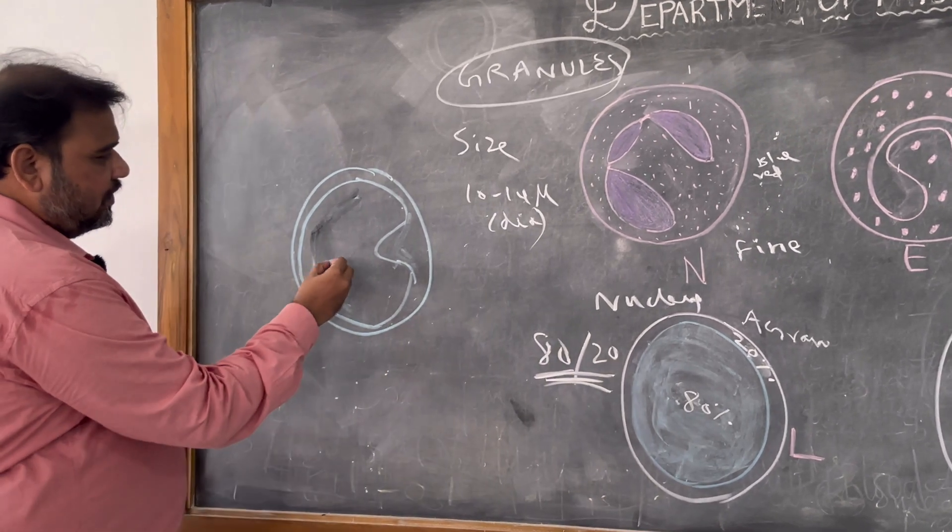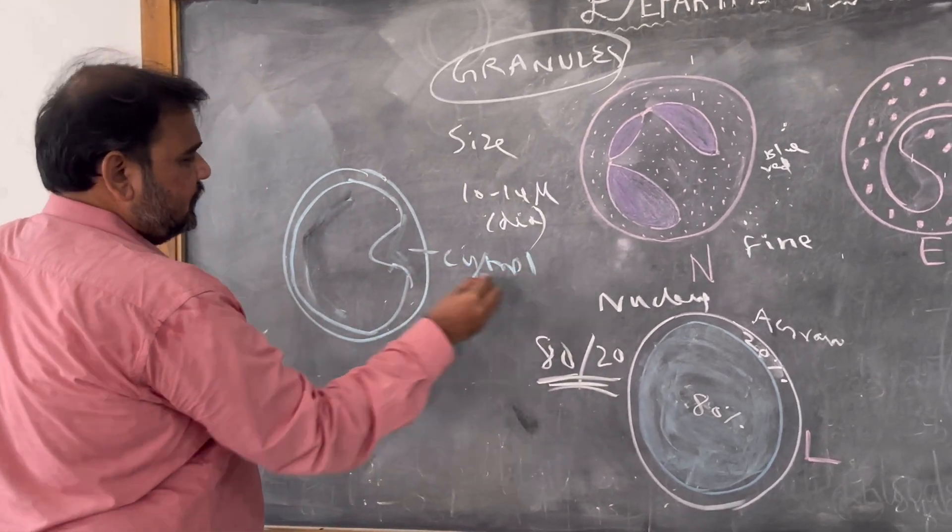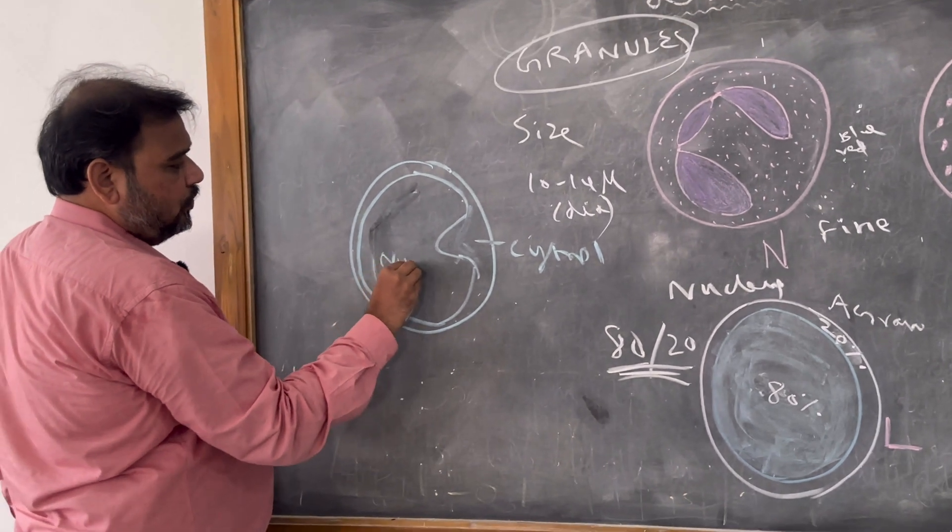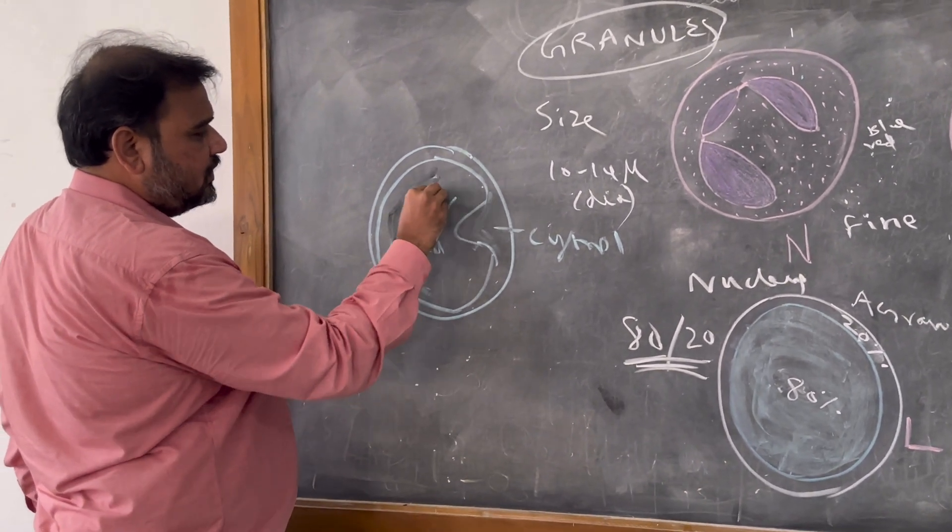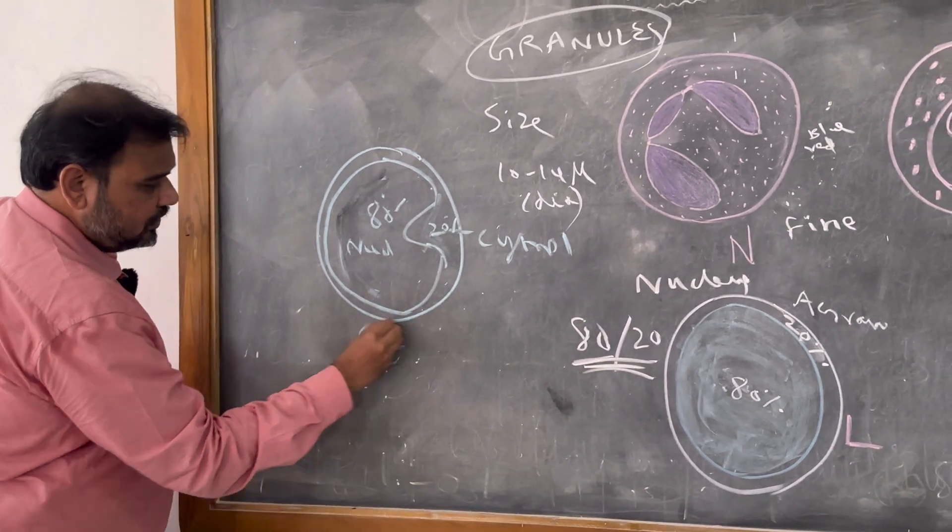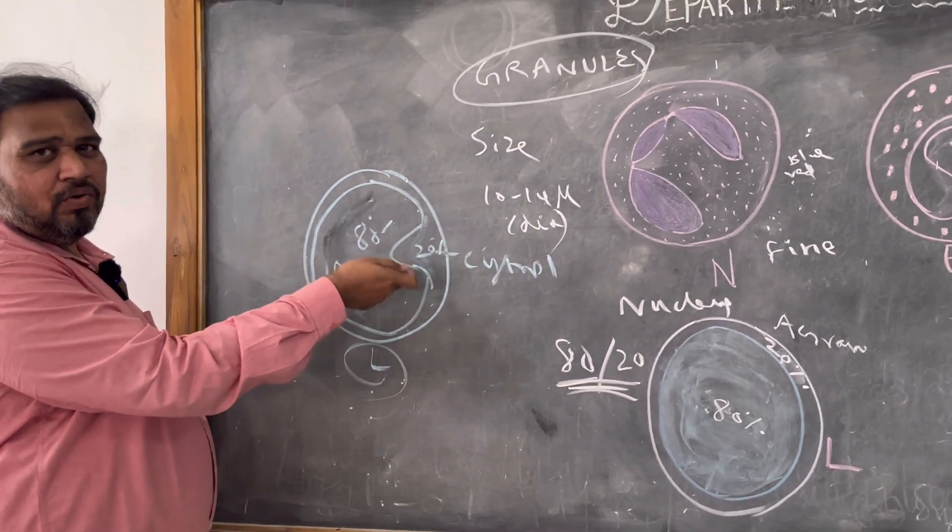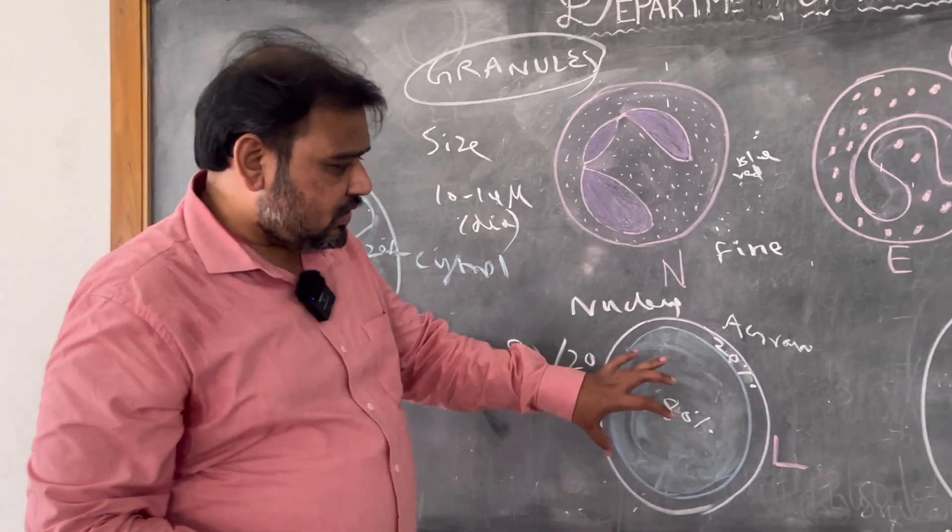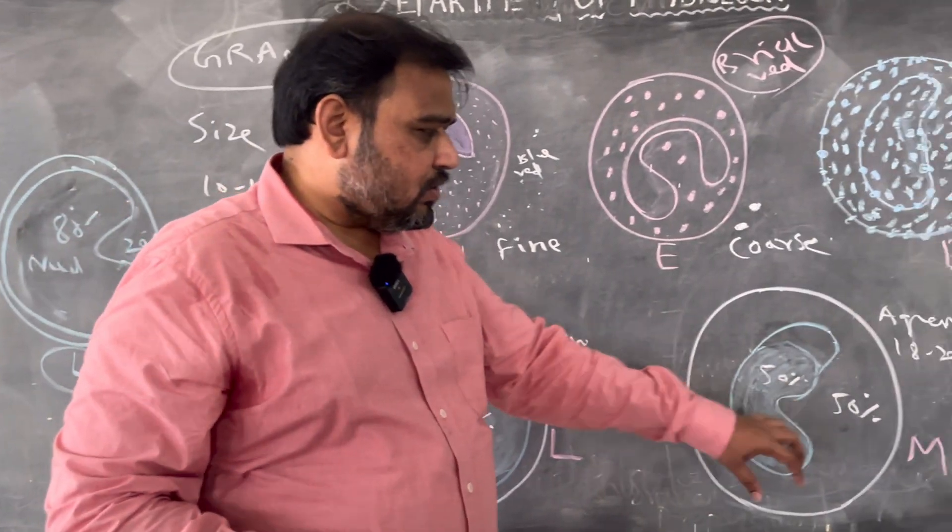So the kidney shaped is not an important point. Again you put 80 concept: here cytoplasm, this is cytoplasm and this is nucleus. So nucleus is almost 80 percentage, cytoplasm is only 20 percent, so this is actually lymphocyte. So do not tell it is kidney shaped and monocyte. So 80-20 concept differentiates lymphocyte and monocyte.